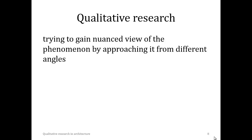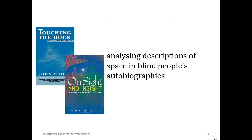When conducting qualitative research, you try to build up a nuanced view by approaching the phenomenon from different angles. What are possible angles to approach the phenomenon under study — in our imaginary example, the spatial experience of people who are blind? One way in which you could approach it is by reading autobiographies written by blind people and analysing how they describe space and how they interact with and experience it.